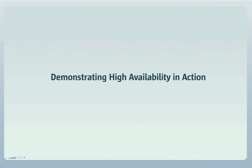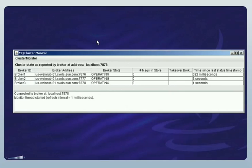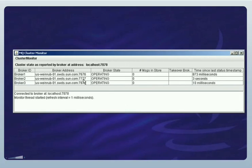Now I'll start up an enhanced cluster and demonstrate how it automatically detects and recovers from a broker failure. I have started a cluster consisting of three brokers. I have also started a cluster monitor that shows these brokers: Broker 1 at port 7676, Broker 2 at port 7777, and Broker 3 at port 7878. All are shown in an operating state.